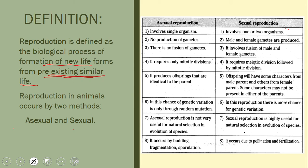Reproduction occurs by two methods — asexual and sexual — and we will be going into the different points of each.